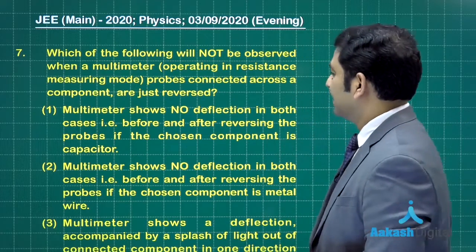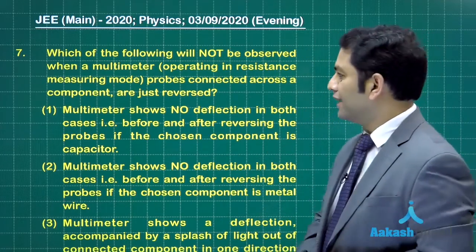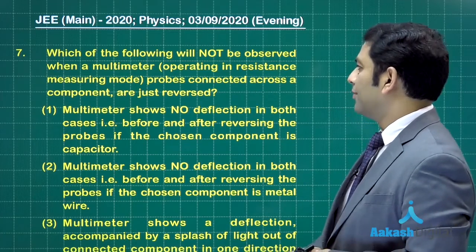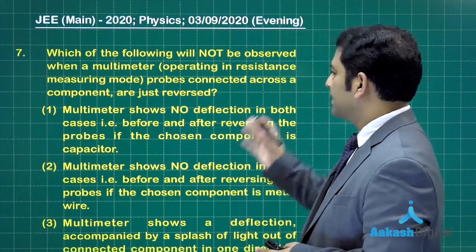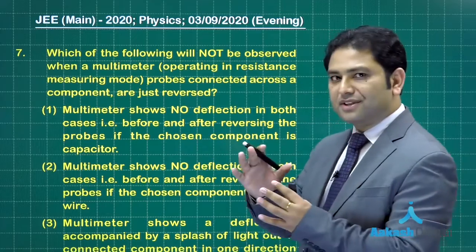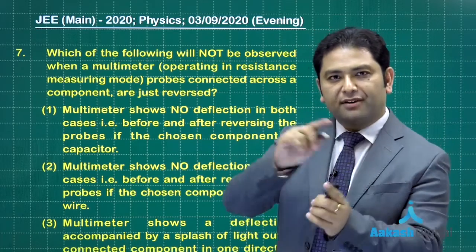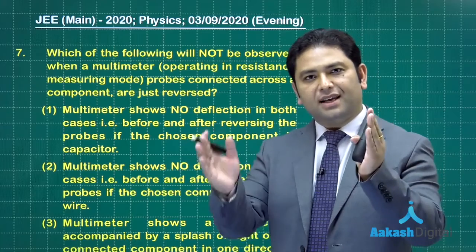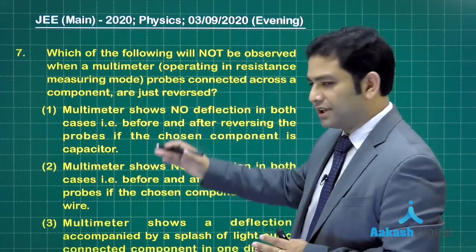Let's see the next question. Which of the following will not be observed? You've got to be very careful when a multimeter operating in resistance measuring mode probes connected across a component are just reversed. So the idea is the multimeter probes are reversed - initially A-B, later B-A - and there are different components.